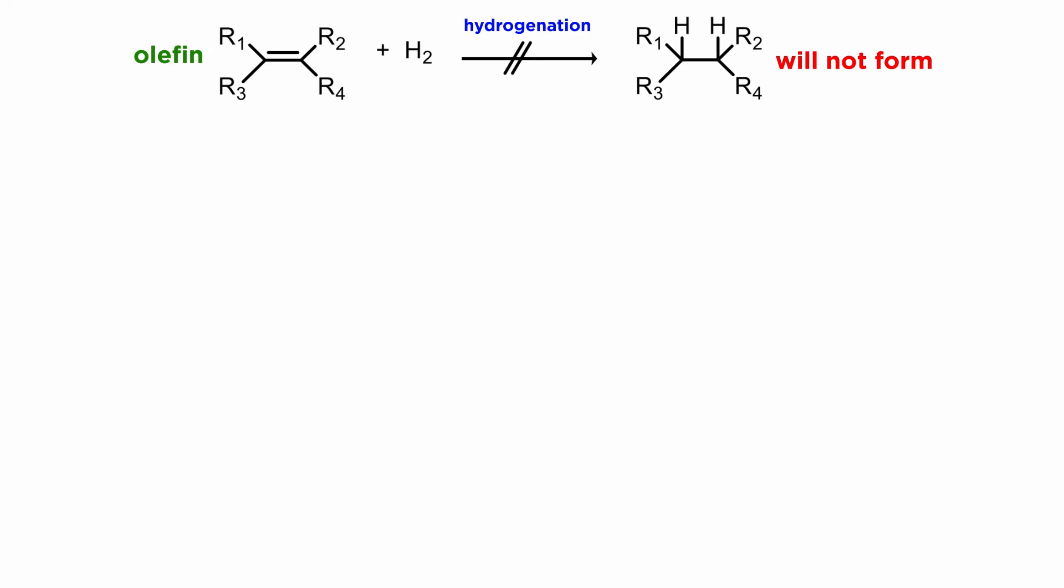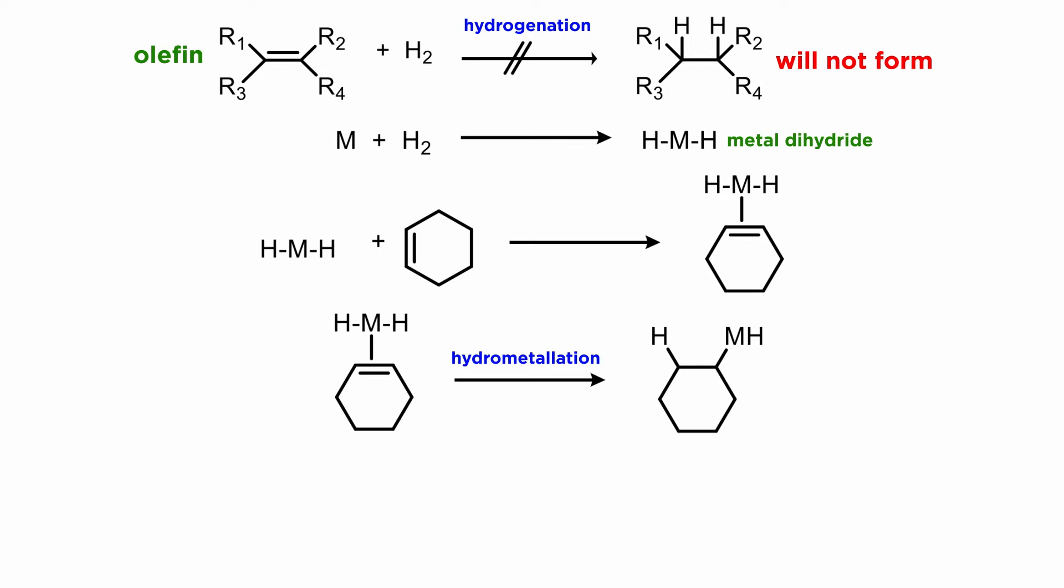Now let's revisit the olefin hydrogenation problem. We may postulate that hydrogen can be activated by a transition metal yielding a metal dihydride. If the olefin coordinates to the metal in a second step, we can now envision hydrometallation and then C-H reductive elimination to yield the desired hydrogenation product and regeneration of the catalyst, which can then perform another cycle.